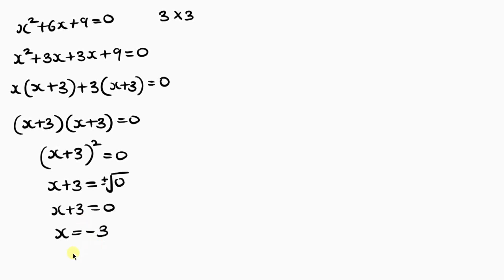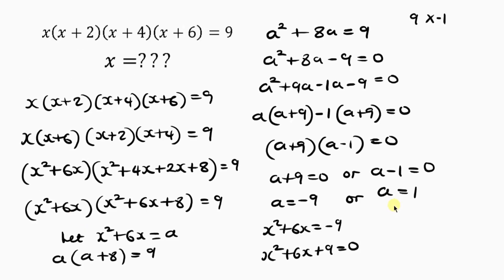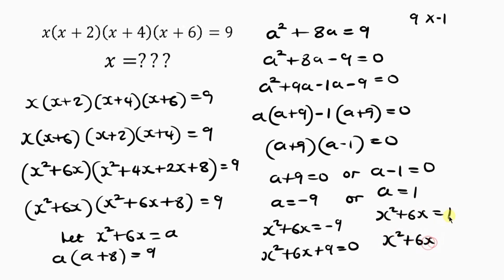Now let's use the second case: a = 1. Since a = s²+6s, we write s²+6s = 1. Moving 1 to the left-hand side, positive 1 becomes negative 1: s²+6s−1 = 0. This is a quadratic equation.